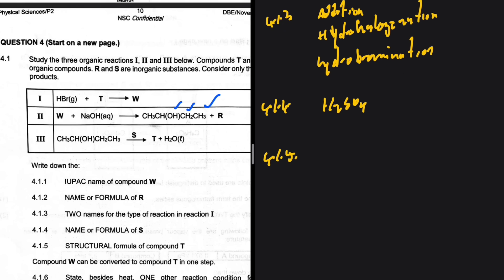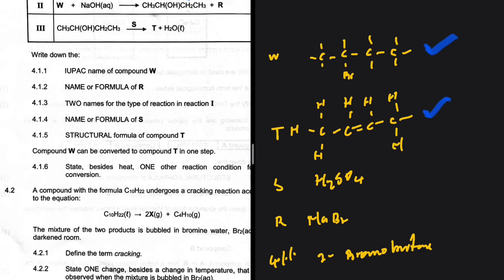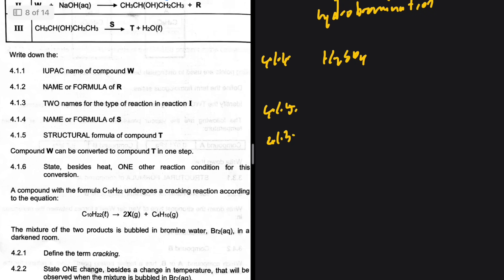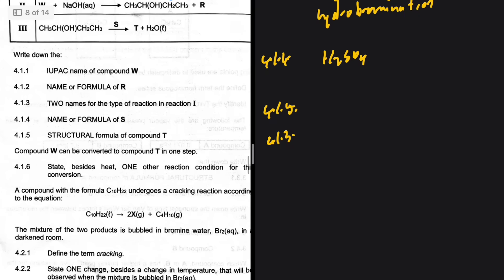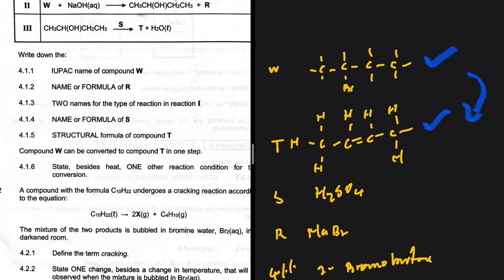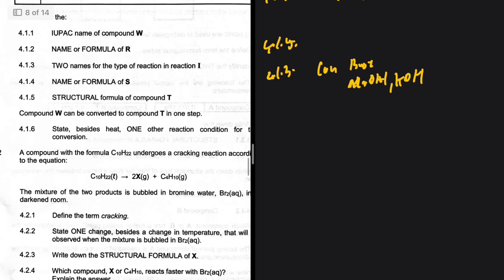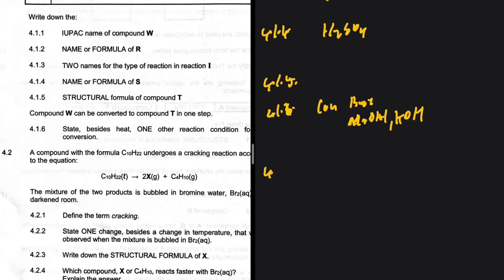4.1.6, W can be converted to T in one step. That would be dehydro-halogenation. The question states, besides heat, one other reaction condition for this conversion. We're going from W to T, so it's elimination. We need a concentrated base, NaOH or KOH. The K will take the Br and the OH will take the H, and we're going to have KBr and H2O as the other products.